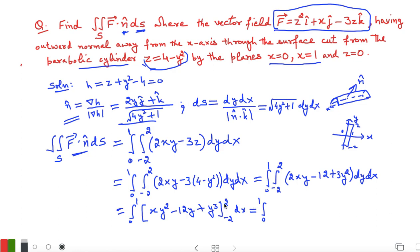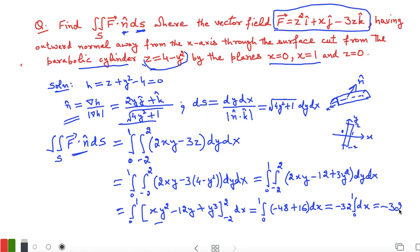Substituting the limits y = −2 to 2: the xy² term gives x(4 − 4) = 0; the −12y term gives −12(2) − (−12)(−2) = −48, contributing −48; and the y³ term gives 8 − (−8) = 16. So the inner integral equals −48 + 16 = −32. Then ∫₀¹ (−32) dx = −32. The total flux is −32.